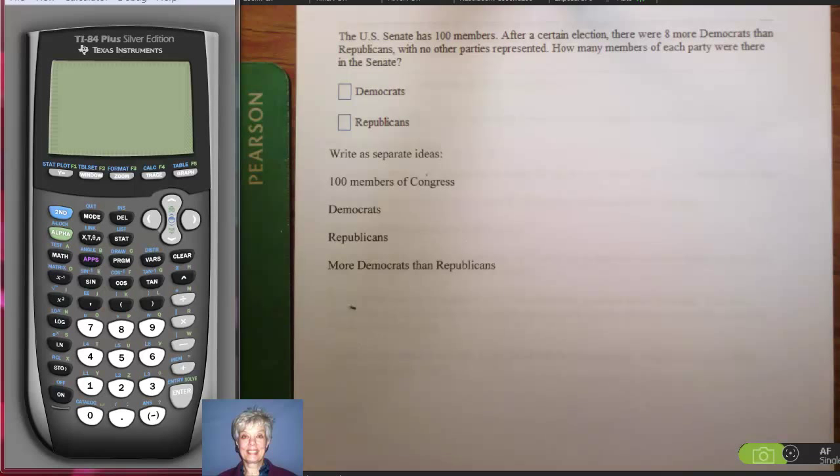Here's one. The U.S. Senate has 100 members. After a certain election there are eight more Democrats than Republicans, with no other parties represented. How many members of each party were there in the Senate?